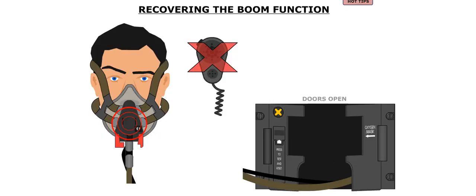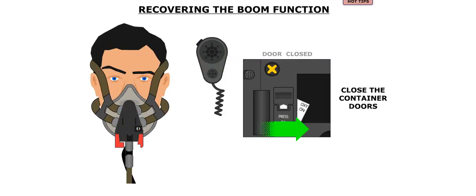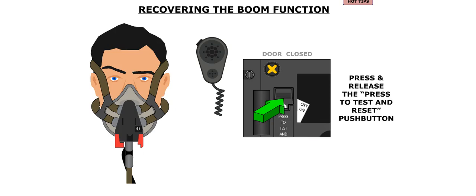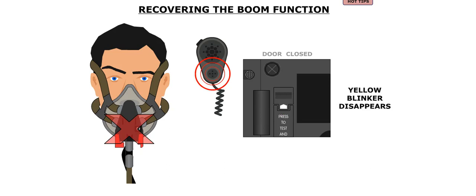Once the oxygen mask is out of its storage box, the boom microphone function can be recovered by closing the oxygen mask container doors. The oxygen flow is interrupted by pressing the test push button, and the yellow cross indication disappears.